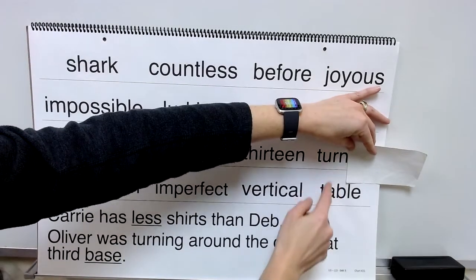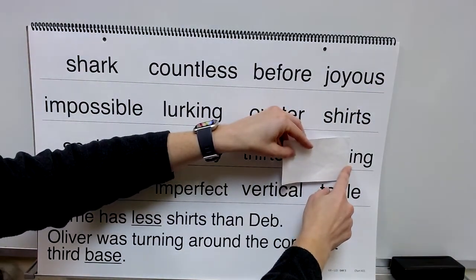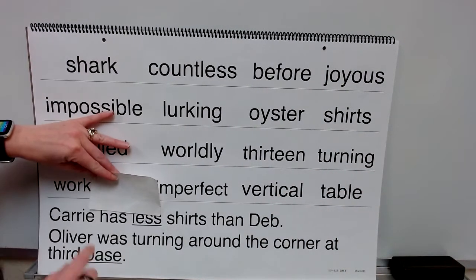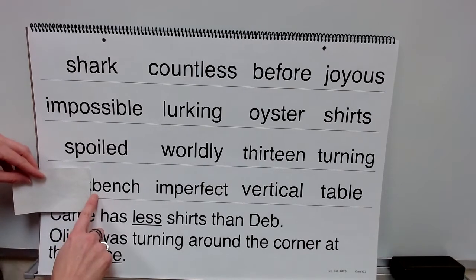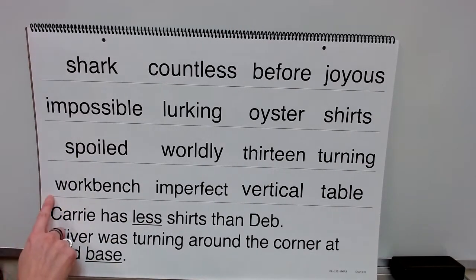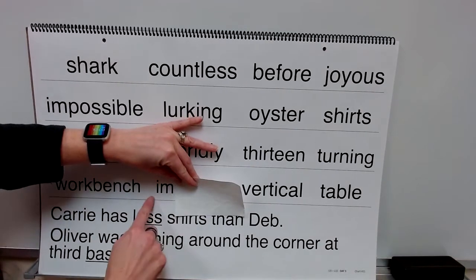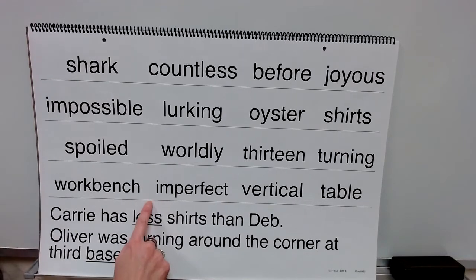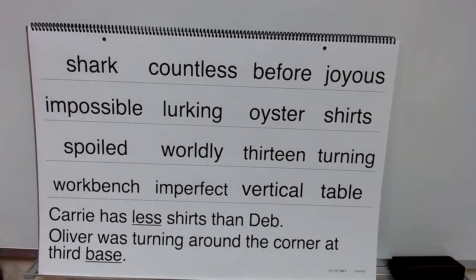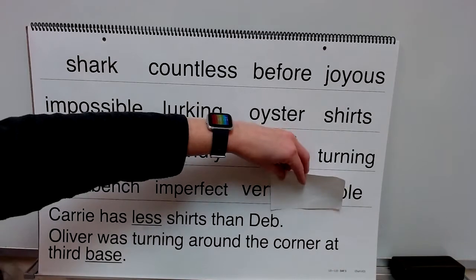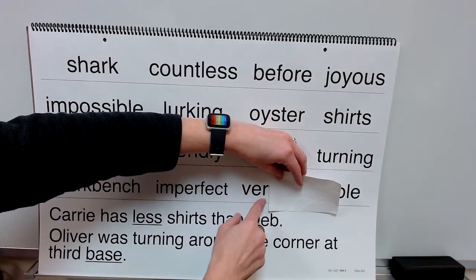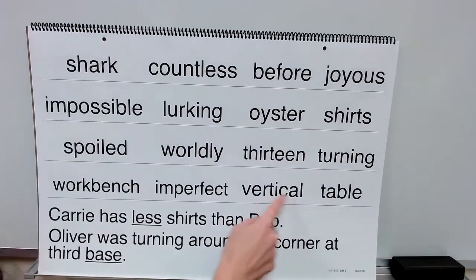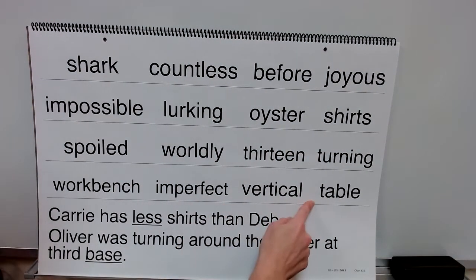Base word: turn. Ending: ing. Word: turning. Syllable: work. Syllable: bench. Word: workbench. Prefix: im. Base word: perfect. Word: imperfect. Syllable: ver. Syllable: ti. Syllable: cal. Word: vertical.